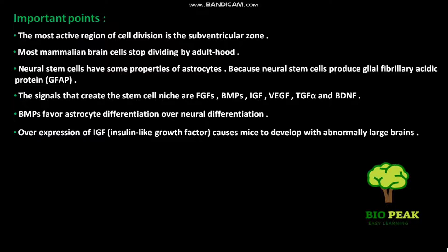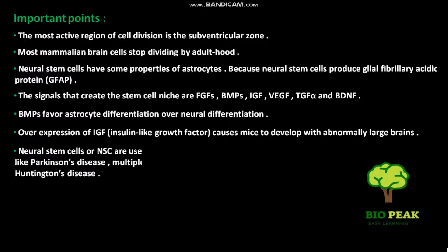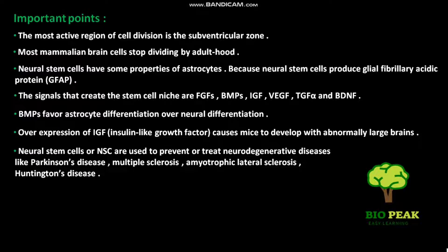Overexpression of IGF, or insulin-like growth factor, causes mice to develop with abnormally large brains. Neural stem cells, or NSC, are used to prevent or treat neurodegenerative diseases like Parkinson's disease, multiple sclerosis, amyotrophic lateral sclerosis, and Huntington's disease.